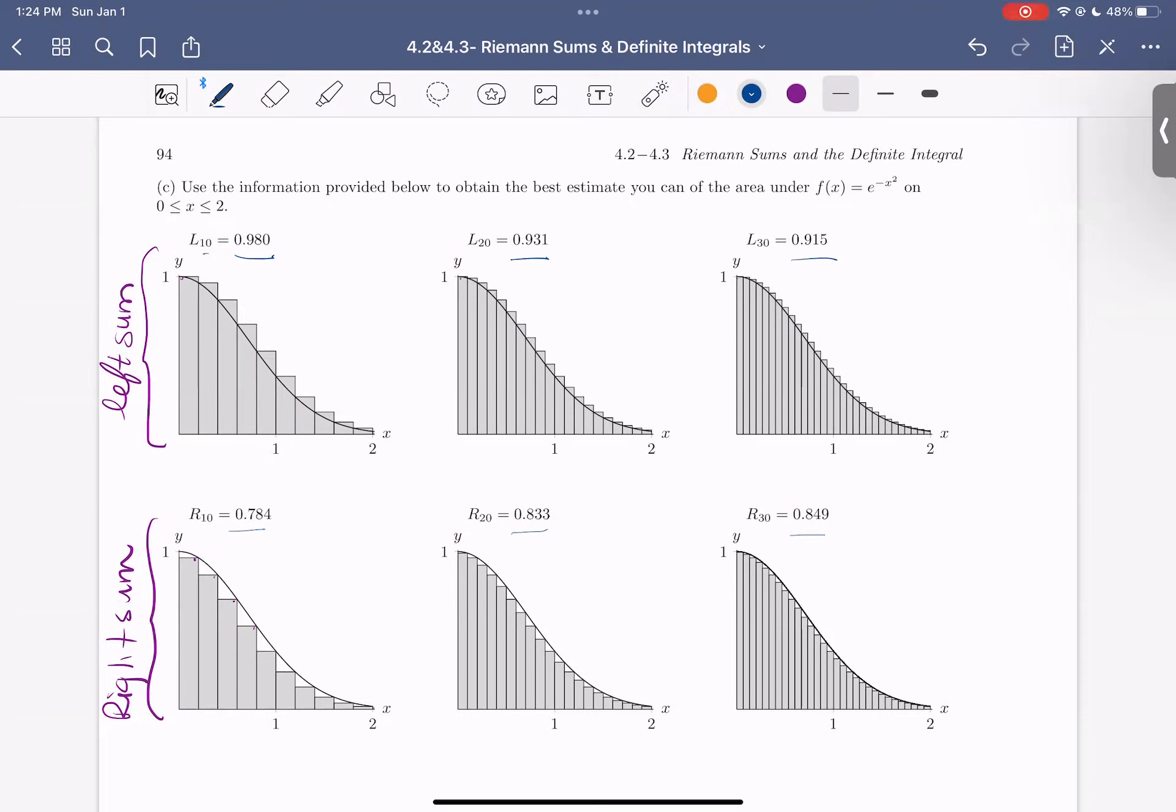So we see that these left-hand sums get smaller and smaller. The right-hand sums get larger and larger as they take up more of the area under the curve.